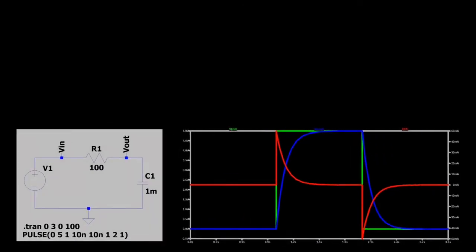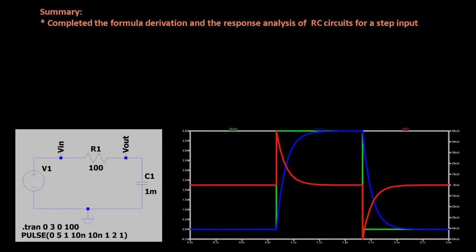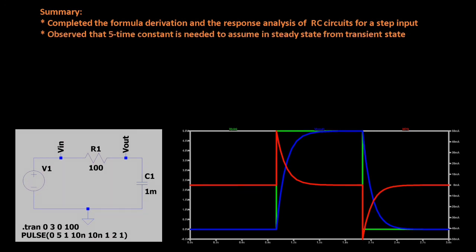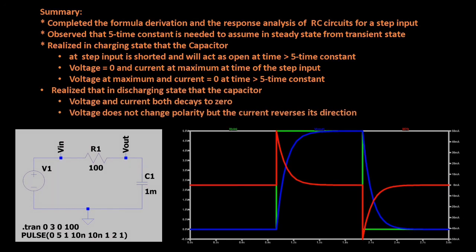Before we end this video, here is a summary of what we have discussed. We completed the formula derivation and the response analysis of RC circuits for a step input. Observe that 5 time constants is needed to assume steady state from the transient state. In the charging state, the capacitor at step input is shorted and will act as an open at time greater than 5 time constants. Voltage is equal to zero and current at maximum at the time of step input; voltage at maximum and current equal to zero at time greater than 5 time constants. In the discharging state, the capacitor voltage and current both decay to zero, and voltage does not change polarity but the current reverses its direction. That's all for this video and thank you for your support to Bertronics TV.